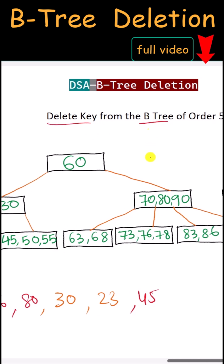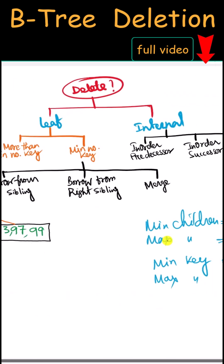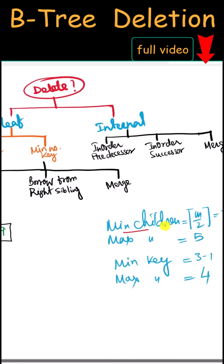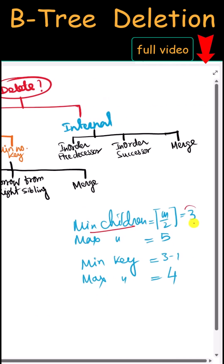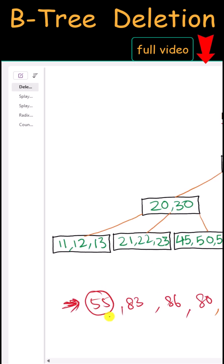We will perform deletion in a B-tree of order 5. That means we can have a minimum of three children and a maximum of five children. The minimum number of keys can be two and the maximum number of keys can be four.